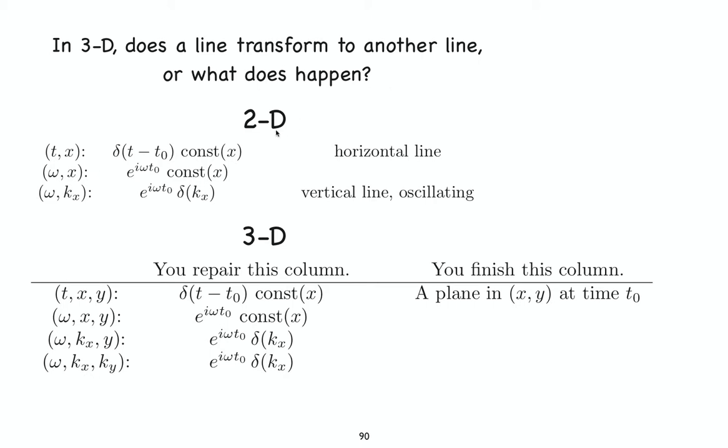Here we have a quick review of the theory, which I think you have already seen. We have here a horizontal line in a two-dimensional space. It has an impulse at t equals zero.